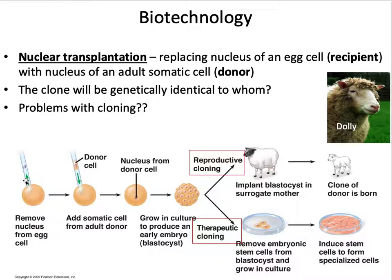In nuclear transplantation, you start with an egg cell and remove its nucleus. An egg cell only has 23 chromosomes, so it can never become a whole organism on its own. You then transplant the nucleus of an adult somatic cell — which has all 46 chromosomes and the full complement of DNA — into the egg cell and let it undergo mitosis. It grows into a ball of cells called a blastocyst, which can then be used for reproductive or therapeutic cloning.